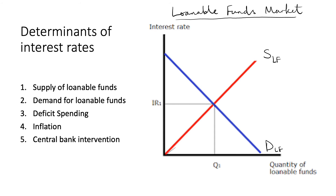Deficit spending is also a reason why the demand for loanable funds may change. If the government decides to spend more without increasing taxes, then it must borrow the difference by demanding loans in the loanable funds market. This increases the demand for loanable funds, pushing up the real interest rate — again, holding all other variables constant.